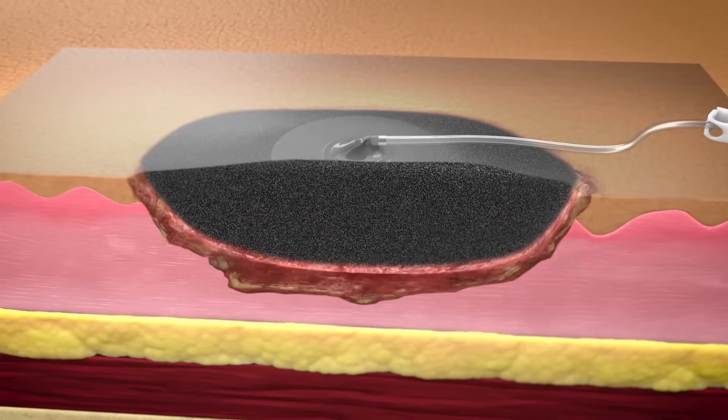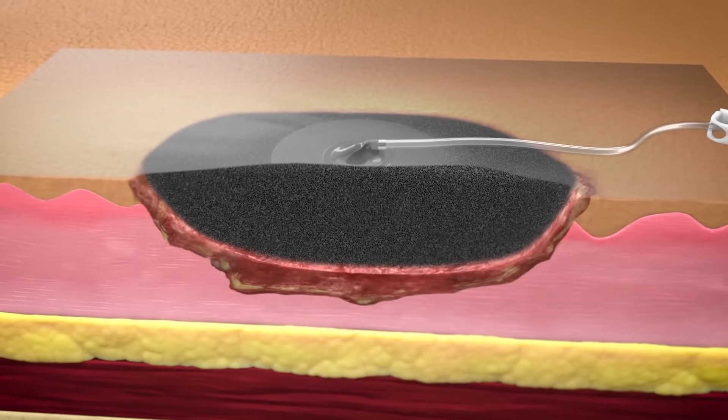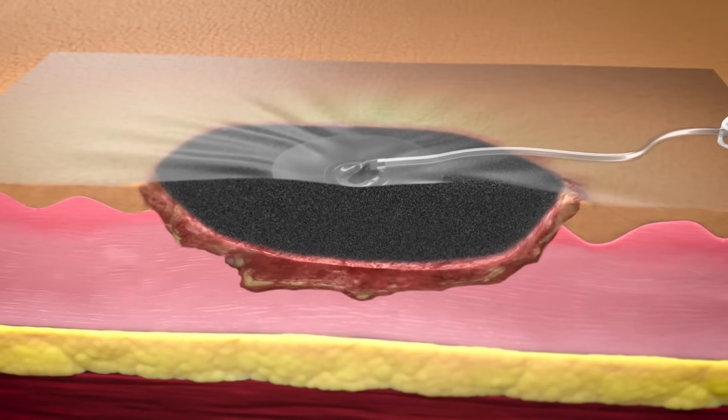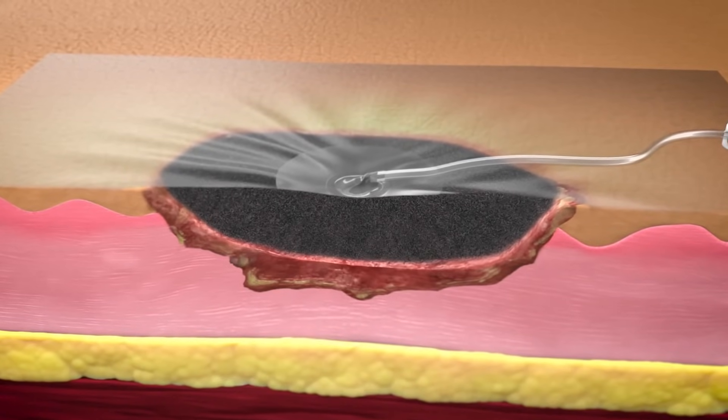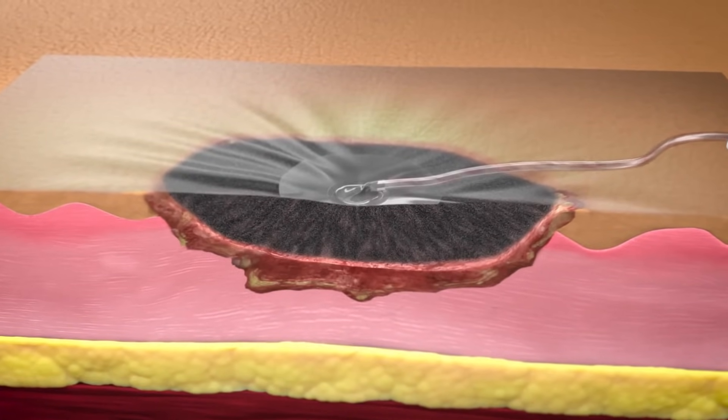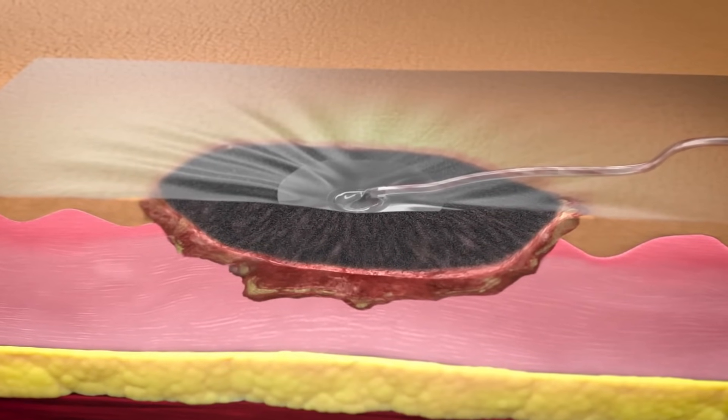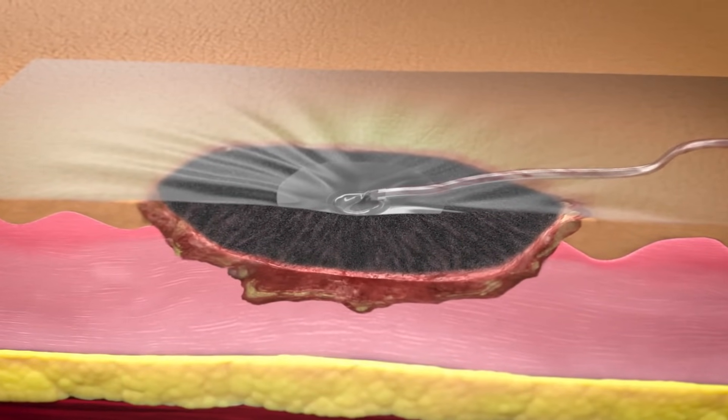The application of uniform negative pressure, when delivered by 3MVac therapy, applies mechanical forces—macrostrain and microstrain—that together remove exudate and infectious material, reduce edema and promote perfusion, creating an environment conducive to the formation of granulation tissue.